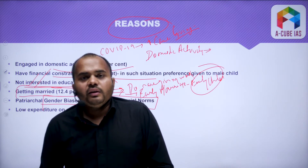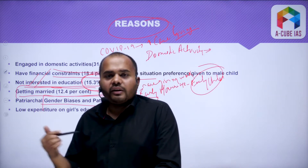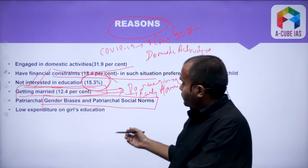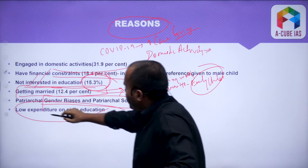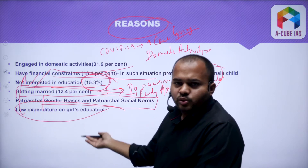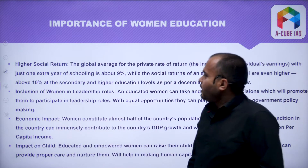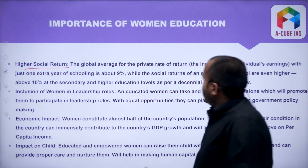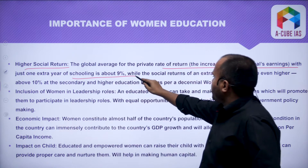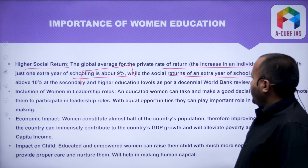There are also many patriarchal norms under which women's education takes a hit. Low expenditure on girls' education is a similar point — due to financial constraints, families have to choose between giving education to a boy or a girl. Now, what is the importance of women's education? First, higher social returns. The global average for the private rate of return with just one extra year of schooling is about 9%, while the social returns of an extra year are even higher — above 10% at the secondary level and higher education level, as per a World Bank review.